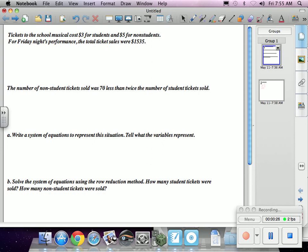So let's say that X is reading through this. Tickets to the school musical cost $3 for students and $5 for non-students. So my two unknowns are the number of student tickets sold and Y we'll call the number of non-student tickets sold. So I'm going to go ahead and start with that.